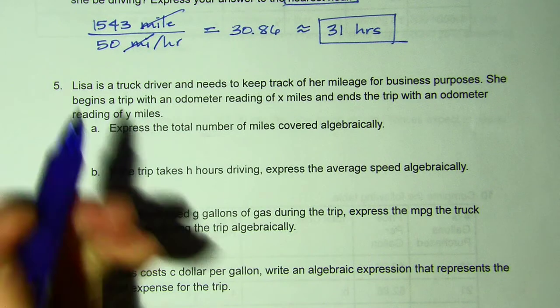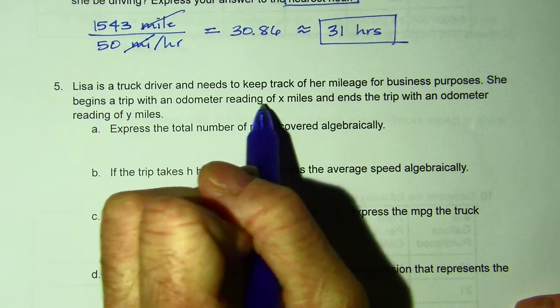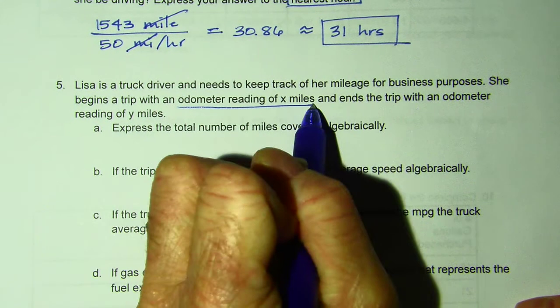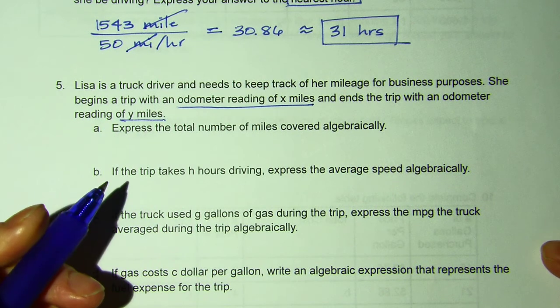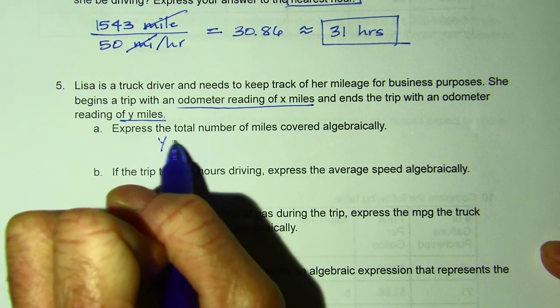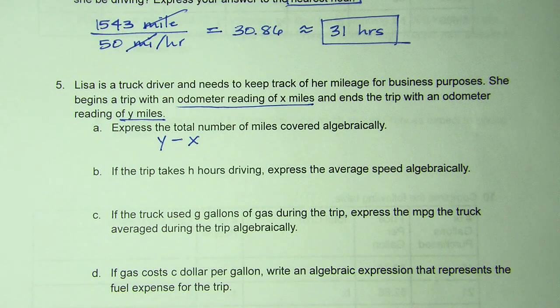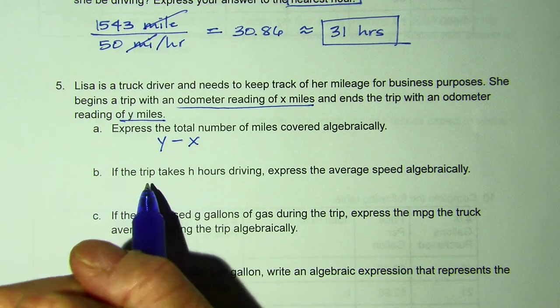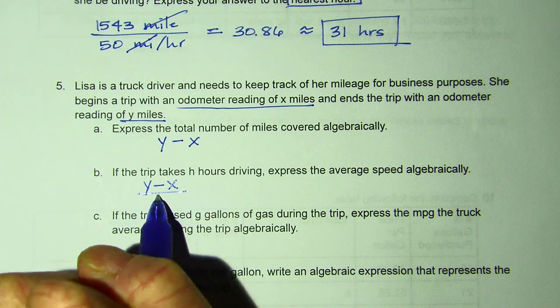So Lisa is a truck driver. She has to keep track of her mileage. She begins a trip with an odometer reading of X and ends the trip with an odometer reading of Y. Express the total number of miles covered. So her ending minus the beginning. So Y minus X would give her miles traveled. Part B, if the trip takes H hours to drive, express her average speed. So it would be miles, what we got in part A, divided by her time.